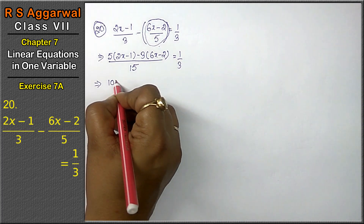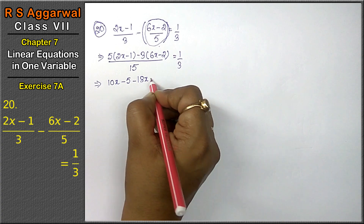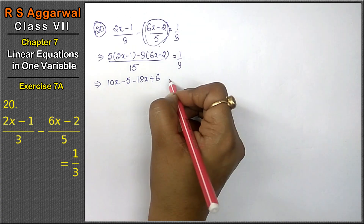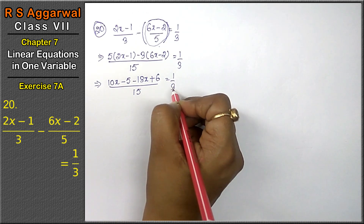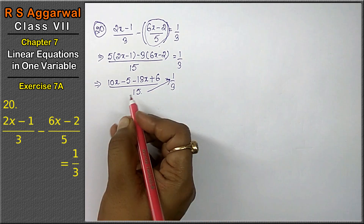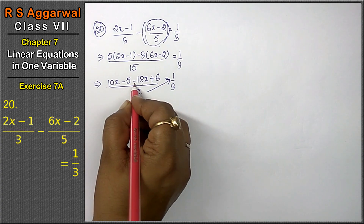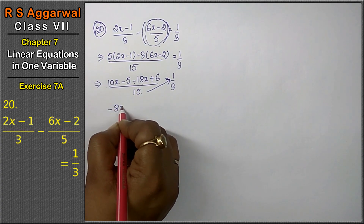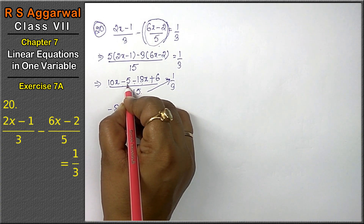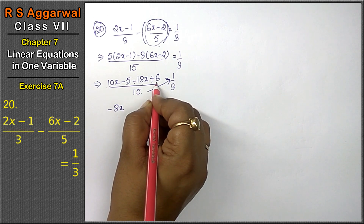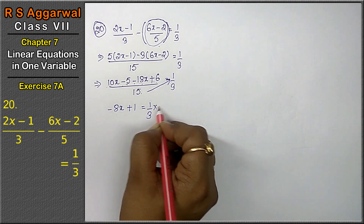Now expanding: 5 gives 10x minus 5, minus 3 gives 18x, and minus minus gives plus 6, all upon 15, equals 1 upon 3. Then for 10x minus 18x — they have opposite signs so we subtract — giving minus 8x. For the constants, minus 5 and plus 6, both handled, giving plus 1, upon 15 equals 1 upon 3.